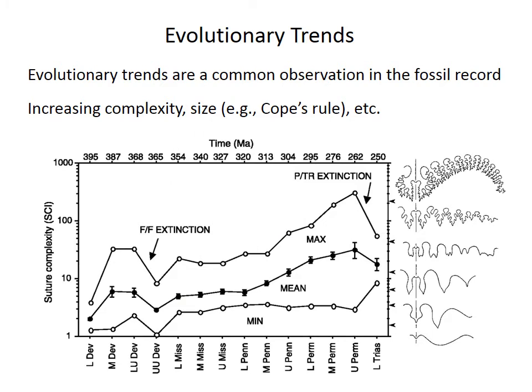Evolutionary trends are commonly observed in the fossil record. For example, there's Cope's Rule — the observation that many fossil groups, especially vertebrates, have small body size when they first appear but evolved to become larger over time.